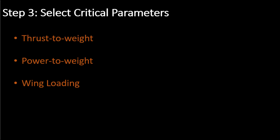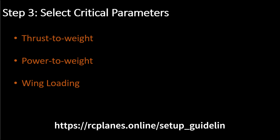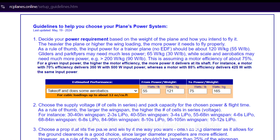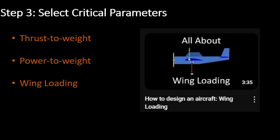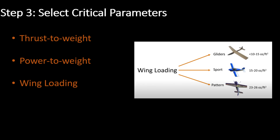Step 3: Select a thrust-to-weight or power-to-weight ratio and wing loading. You can do this by looking at similar models or using rule-of-thumb guidelines. You can visit the RC Planes online website to get guidelines to select the power loading for the way you want to fly your design. You can also check out my video on wing loading for more details.